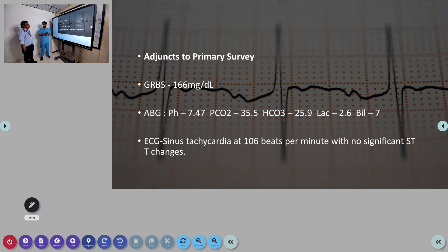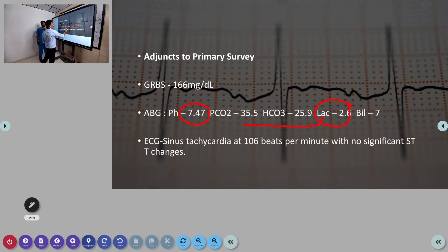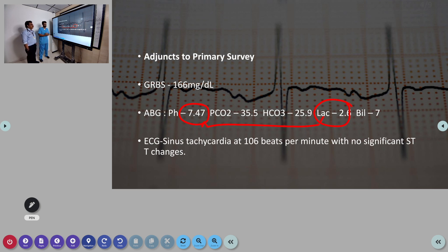In adjuncts to primary survey, DRBS was 166 mg/dL. ABG showed pH 7.47, PCO2 35, bicarb 25 — a VBG was taken. Lactate was 2.6 and bilirubin was 7. The ABG is slightly towards the alkalotic side. The lactate is slightly higher but does not correlate with the pH value. Icteric sclera was noted. ECG showed sinus tachycardia with no significant ST-T changes.